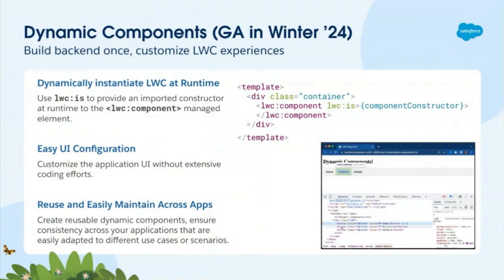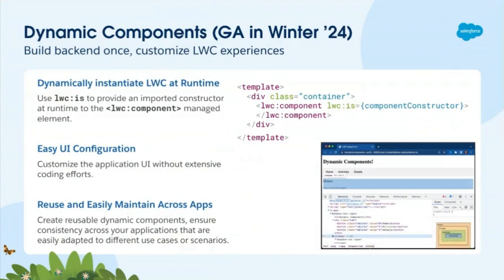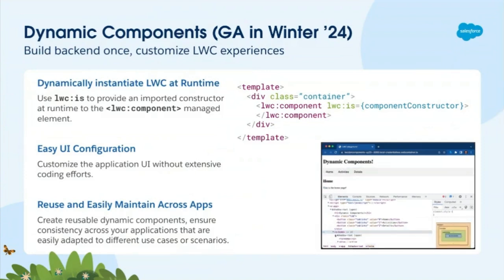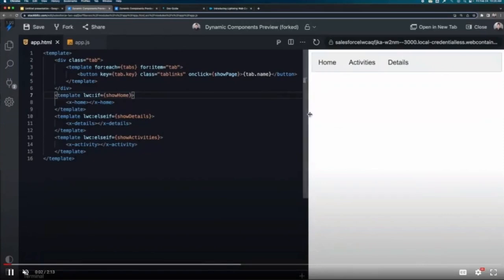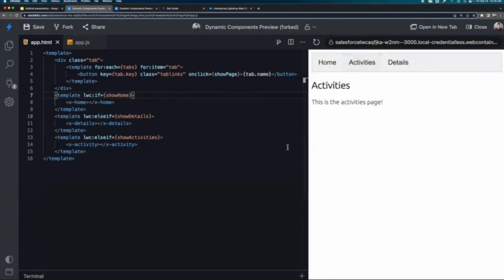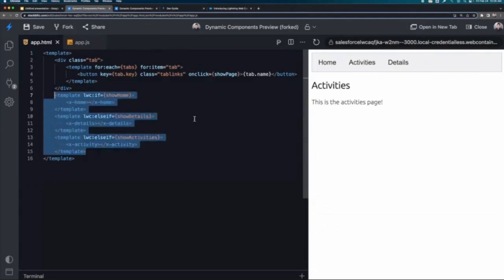This is a powerful capability because it allows you to create highly customizable and reusable templates. You can build one component that queries the data that you need, package that up, and have another separate view component to control the UI/UX and how they get rendered. In this example, we have a page that dynamically renders a component based on the tab that's clicked. If we wanted to implement this in today's world, you would have had to create some conditional logic in the HTML template like shown in the example.